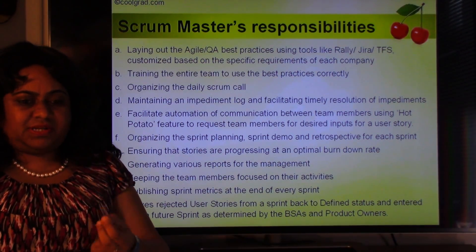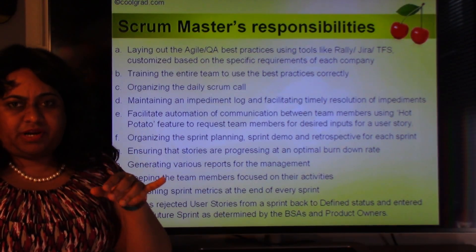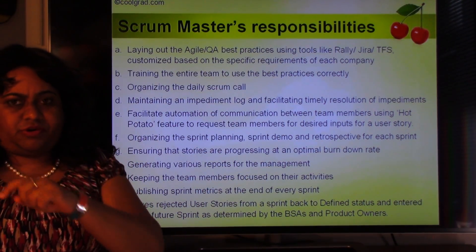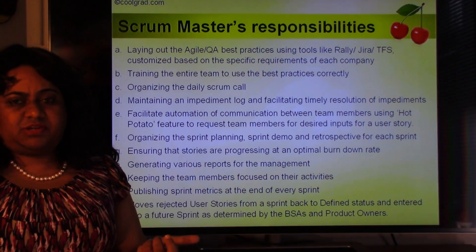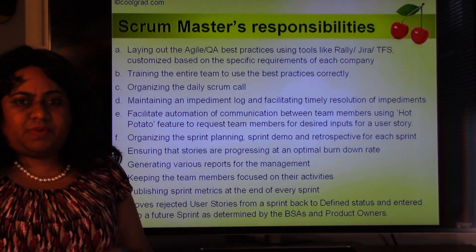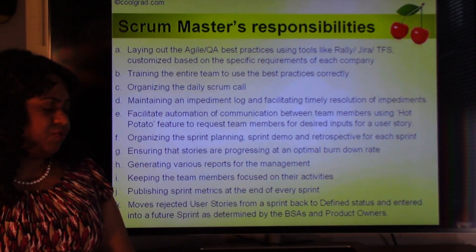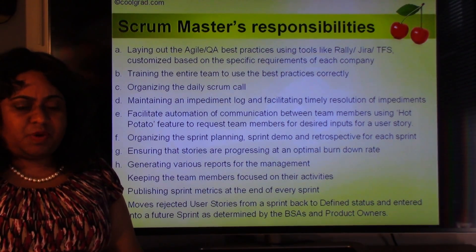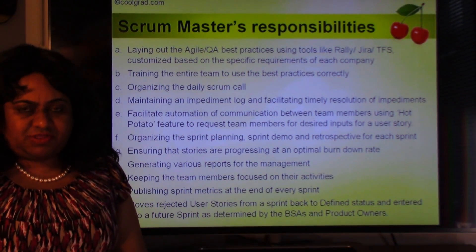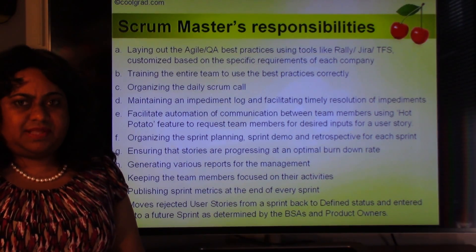The Scrum Master tries to automate communication between team members using something called a 'hot potato' feature. In a user story, there's a 'hot potato' dropdown — you pick someone's name, put a note saying what you want them to do, and they get a notification from Rally or whichever tool and must respond within 24 hours. The Scrum Master also organizes sprint planning, sprint demo, and sprint retrospective for each sprint. Sprint planning decides what to do in the upcoming sprint; sprint demo on the last day showcases all completed functionality; sprint retrospective asks what went well, what did not, and what can be done better.